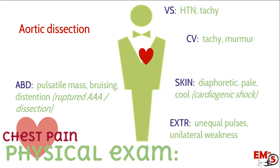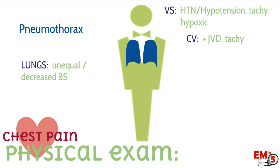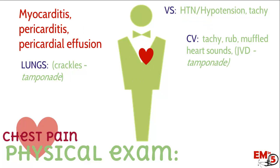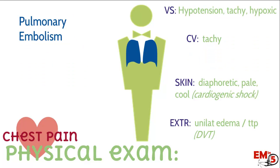These aortic dissection patients also tend to be hypertensive and tachycardic from severe pain. For pneumothorax, the main finding is unequal breath sounds in the lungs, and the patient might be hypoxic. Also look for signs of tension pneumo such as elevated JVD. For myocarditis and pericarditis, you might hear a rub on cardiac exam, and look for signs of tamponade from pericardial effusion: muffled heart sounds, elevated JVD, and crackles. For PE, patients tend to be tachycardic and hypoxic, and in late stage even hypotensive. Always check the extremity exam — unilateral leg edema or tenderness on palpation suggesting DVT means you've got to think PE.